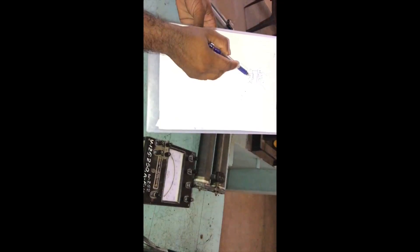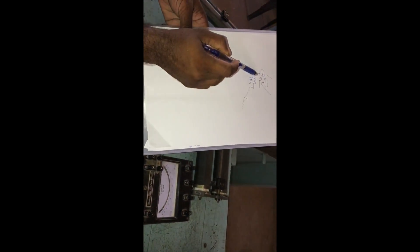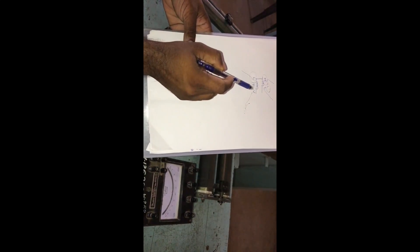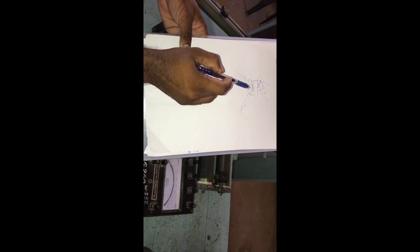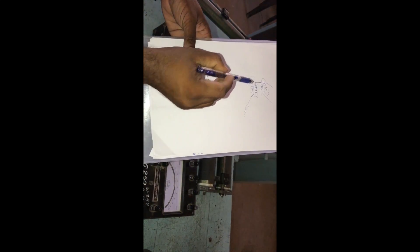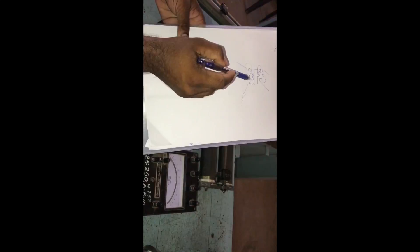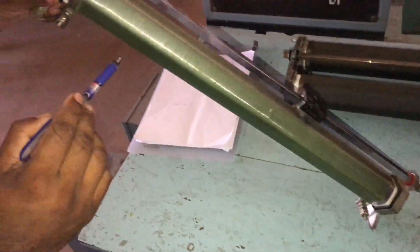Current coil indicated CC, pressure coil indicated PC. The current coil has fewer turns and thick wire. Pressure coil has a large number of turns and high resistance.